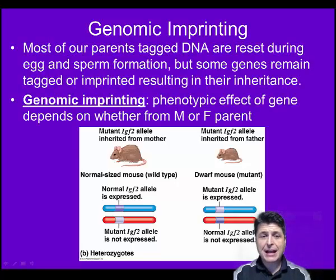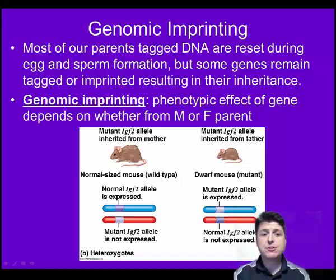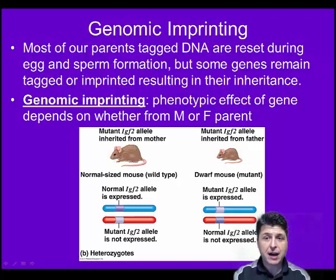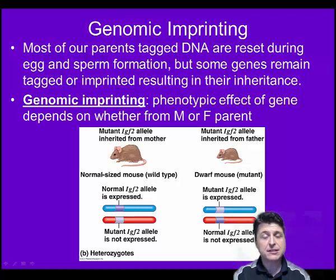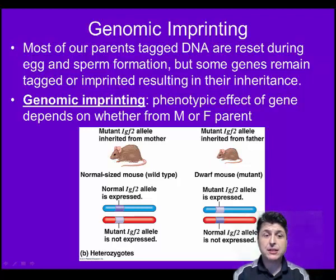One way that methylation plays a role in genetic inheritance is the result of genomic imprinting. For most of our genes, we inherit two working copies — one from mom and one from dad. But with imprinted genes, we only inherit one working copy. Depending upon the gene, either the copy from the mom or the copy from the dad is going to be epigenetically silenced — it's going to have those methyl groups added to it. The effects of genomic imprinting really depend on whether you inherit the silenced gene from your mother or from your father.